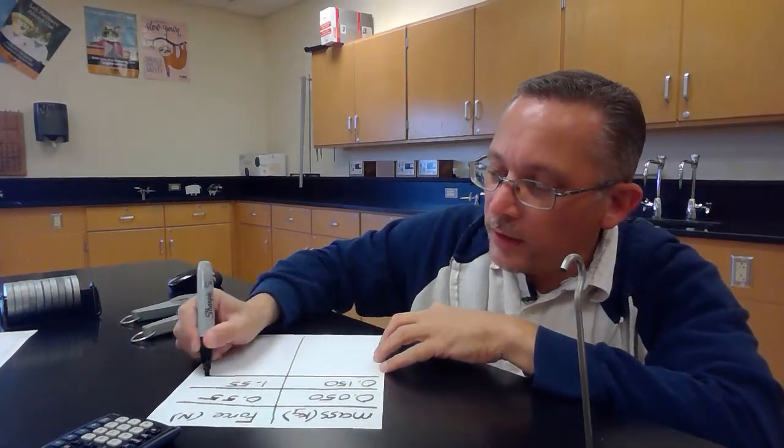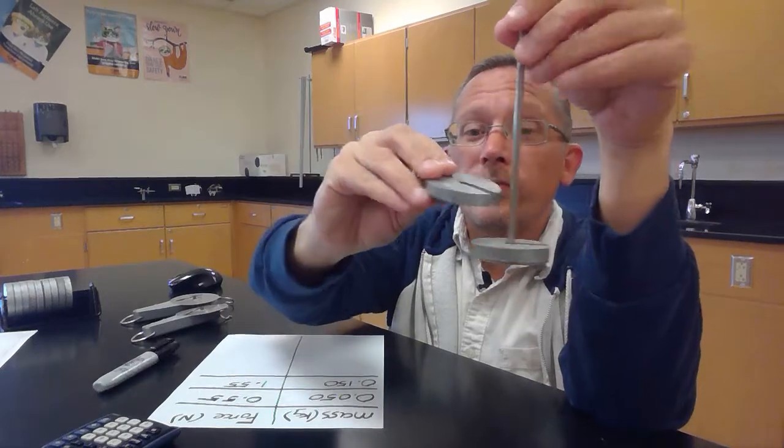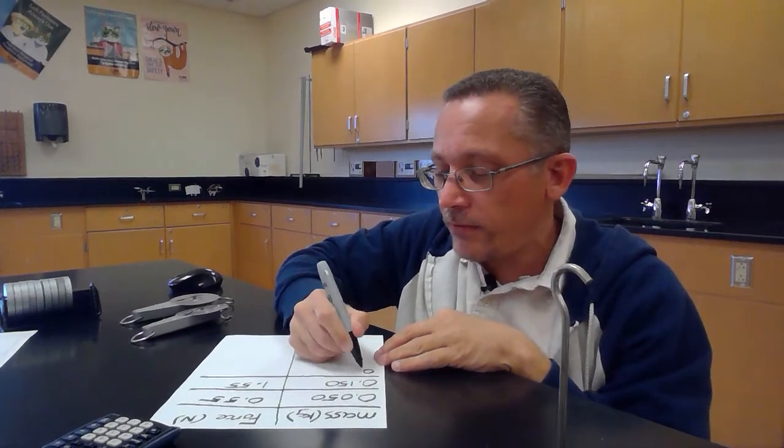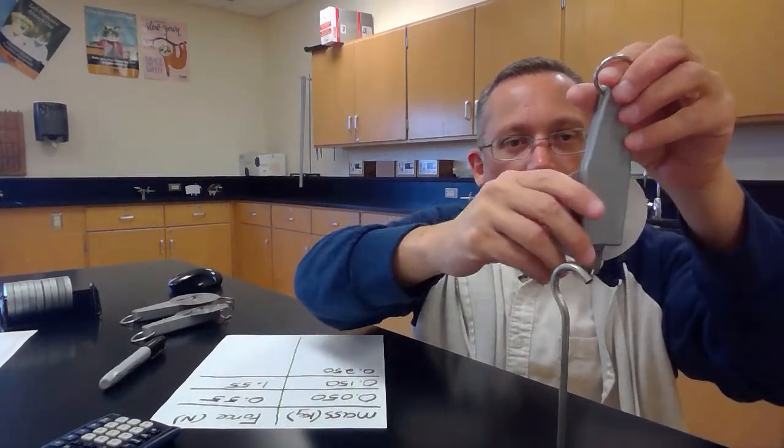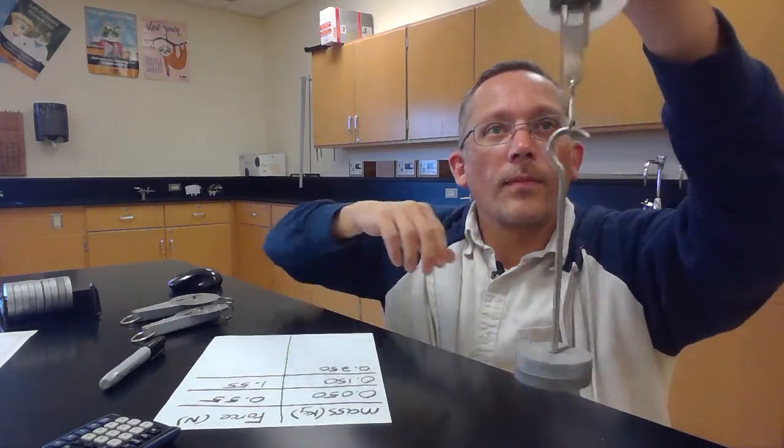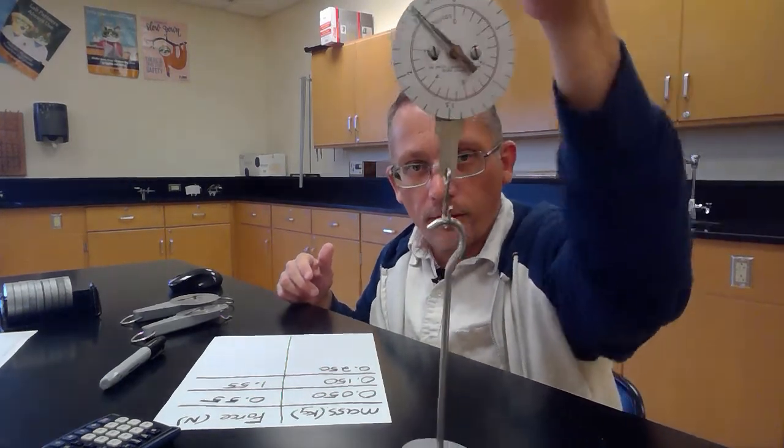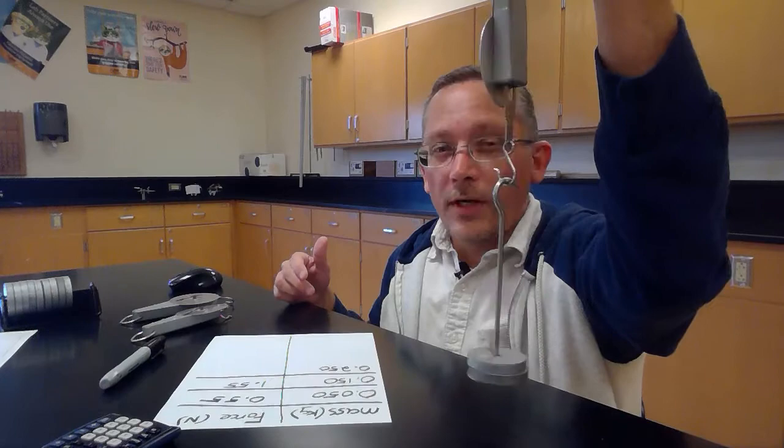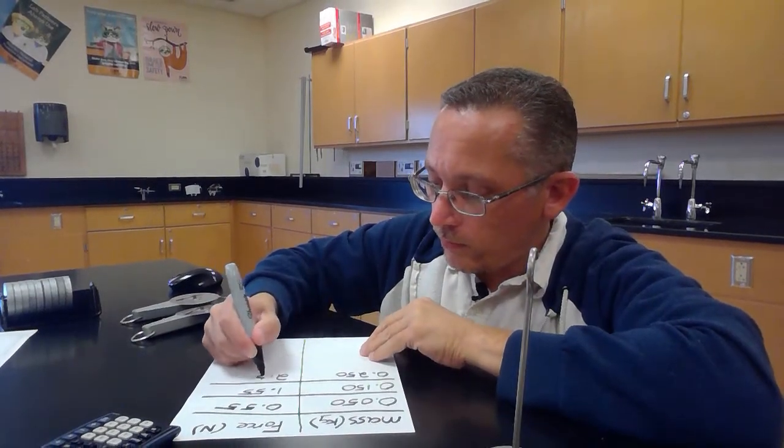Now let's add another 100 grams. So now all together I have 150 here plus another 100, it's 250 grams, which if you divide it by 1,000 is 0.250 kilograms, and let's see what we get here. Okay, this is right about the limit of the scale. Just a little bit more than 2.5 Newtons it looks like. Let's say that's right on 2.5 Newtons. So for that one we'll put 2.50 Newtons.